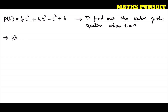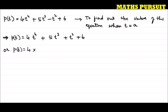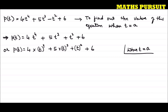The given polynomial is p(t) = 4t⁴ + 5t³ - t² + 6, or I can write p(t) = 4·t⁴ + 5·t³ - t² + 6, just putting some brackets and segregating the variable t from the constants. Now, when the value of t is equal to a, the time has come to replace the value of t with a.